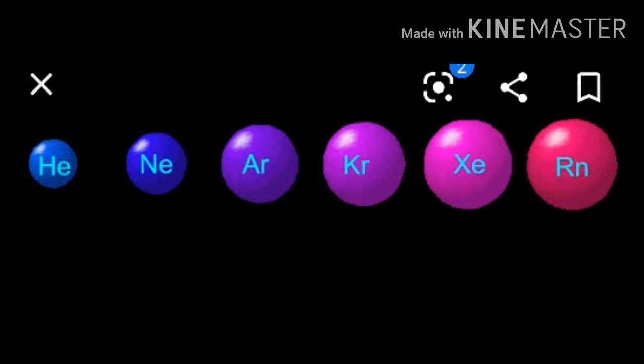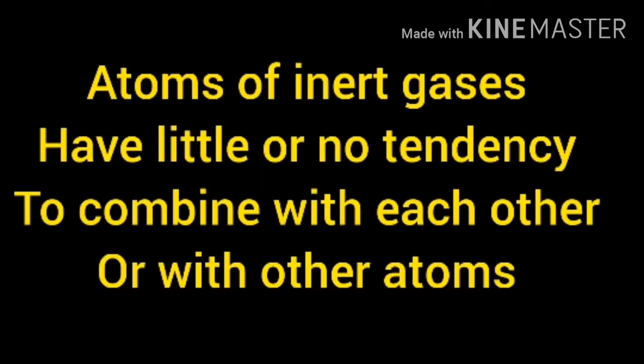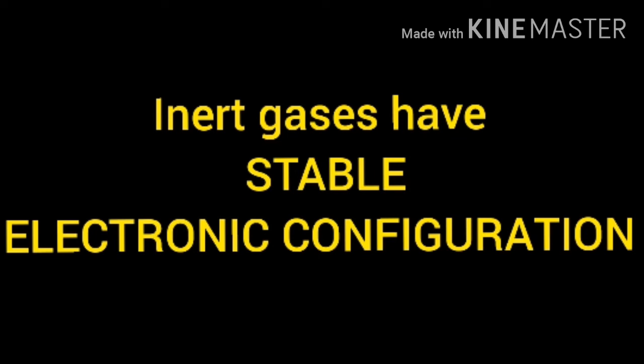These gases do not combine with any other atom or atoms of themselves. They are called monoatomic molecules — the name itself reveals 'inert,' meaning does not react with any other atom. What is the reason for these inert gases existing alone? The only reason is that these gases have a stable valence electron.